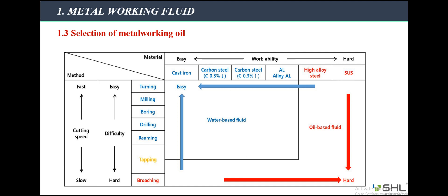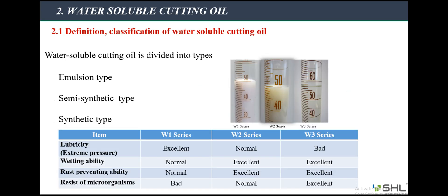Next, we learn about water-soluble oil. Water phase cutting oil is an oil that needs to be mixed with water to form an emulsion. When dry, it leaves a thin film that protects the tool and workpiece very well. It is divided into three types. Type 1 is emulsion oil, made up of components that are insoluble in water such as mineral base oils, fatty oils, and surfactants to disperse the water-insoluble ingredients.